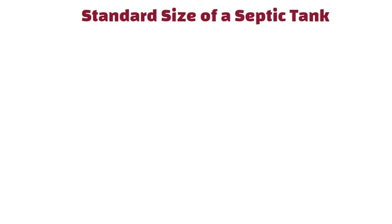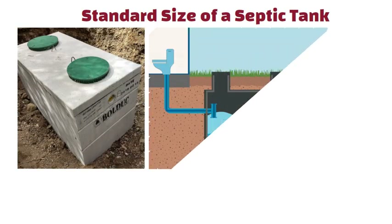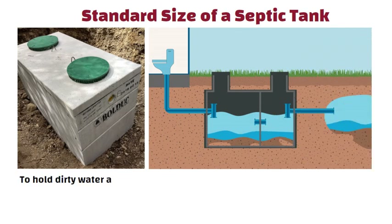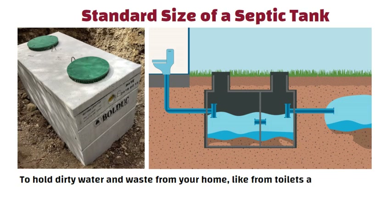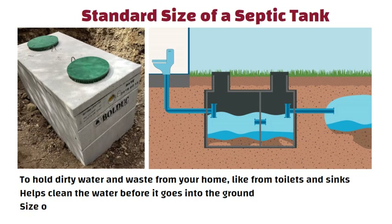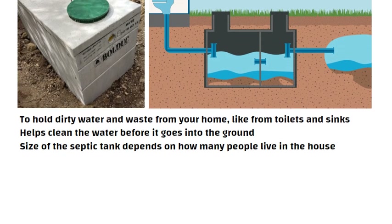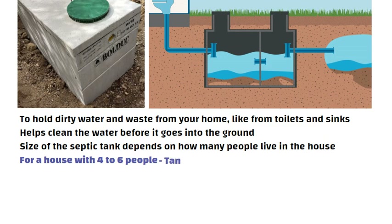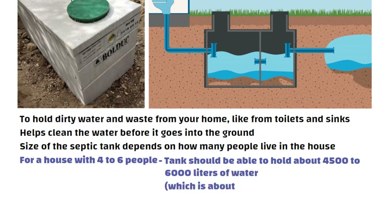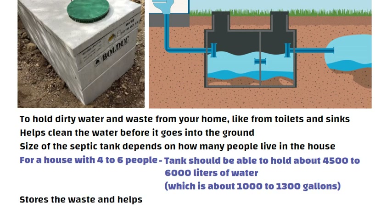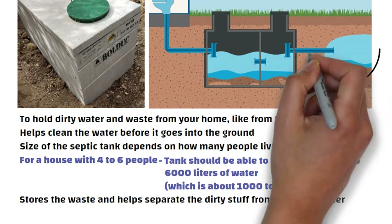Standard Size of a Septic Tank: A septic tank is a large container buried in the ground to hold dirty water and waste from your home, like from toilets and sinks. It helps clean the water before it goes into the ground. The size depends on how many people live in the house. For a house with 4 to 6 people, the tank should hold about 4,500 to 6,000 liters of water, which is about 1,000 to 1,300 gallons. The septic tank stores the waste and separates the dirty material from the clean water, which then slowly goes into the ground.